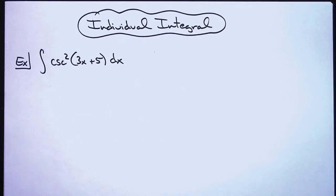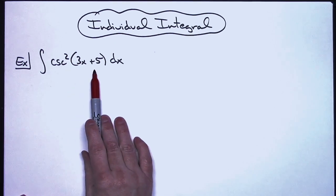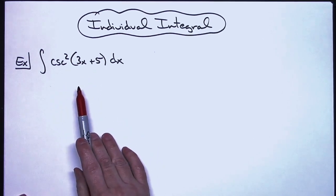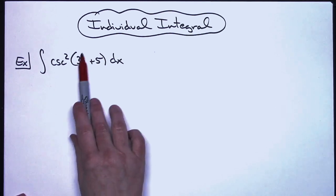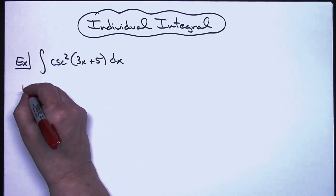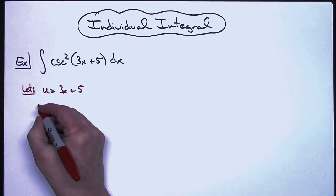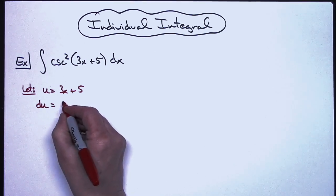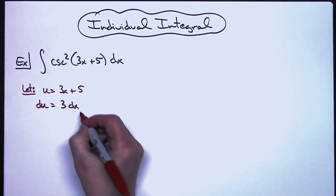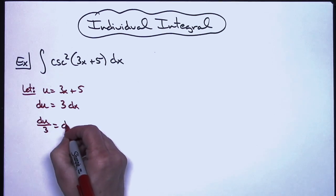In this video I'm going to work out an individual integral. It's going to be a basic u substitution integral, typically found in a Calc 1 class. We're integrating cosecant squared of 3x plus 5. We have a composite function, so a good place to start is letting u be that inside portion: u equals 3x plus 5. Taking the derivative of both sides, du equals 3 dx, and solving for dx gives du over 3.